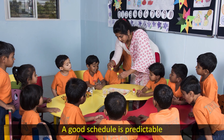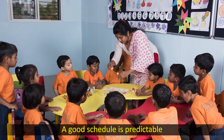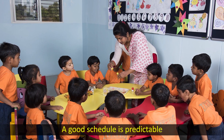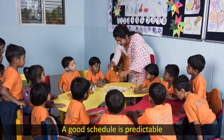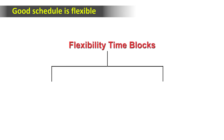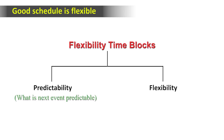A good schedule is predictable — that is, the sequence of events is always the same, although the actual clock time may vary a bit. A good schedule should also be flexible. Flexible time blocks allow for both predictability and flexibility. While the sequence of events is predictable, early childhood educators can adjust the length of time for each block according to the children's involvement or restlessness.